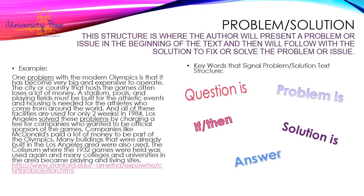How do we know? It says: one problem with the modern Olympics is that it has become very big and expensive to operate. The city or country that hosts the games often loses a lot of money. A stadium, pools, and playing fields must be built for the athletic events and housing is needed for the athletes who come from around the world, and all of these facilities are used for only two weeks. In 1984, Los Angeles solved these problems by charging a fee for companies who wanted to be official sponsors of the games. Companies like McDonald's paid a lot of money to be a part of the Olympics. Many buildings that were already built in the Los Angeles area were also used. The Coliseum, where the 1932 games were held, was used again and many colleges and universities in the area became playing and living sites. Two key words here are: they used the word problems and also the word solved. For problem and solution, you're looking for the author presenting a problem and also attempting to give you a solution or tell you how the problem might be solved.